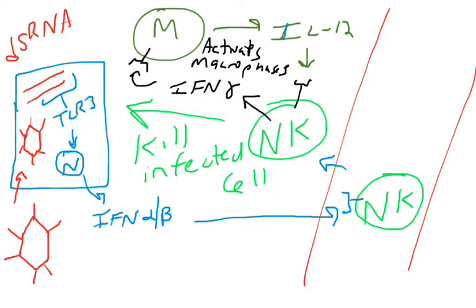This macrophage is going to go into high gear, phagocytosing, destroying, and releasing cytokines. You actually have this little positive feedback loop that occurs. Because now the macrophage will make more IL-12, which will stimulate NK cells to make more interferon gamma. You're going to have these two cells helping each other. Macrophages can help NK cells. NK cells can help macrophages.